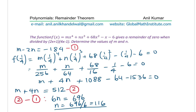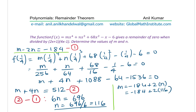We get the value of N as 116. Now we can find M using Equation 1: M = -184 + 2×116 = -184 + 232 = 48. So M = 48.